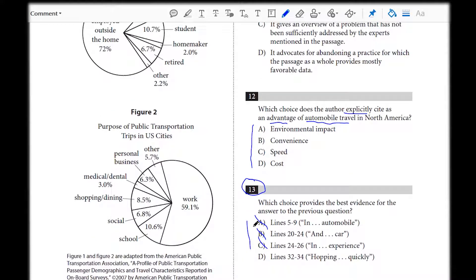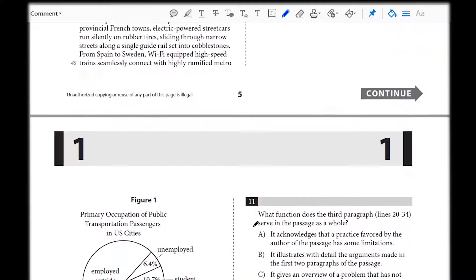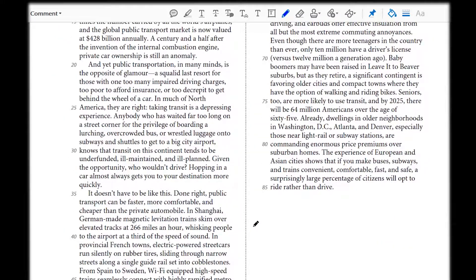Let's hopefully find it in choice D, 32 through 34 here. 32 says, starting with this, hopping in a car almost always gets you to your destination more quickly. Okay, your car, that's an automobile, and we have a benefit here. It gets you to your destination more quickly. Now we got something.